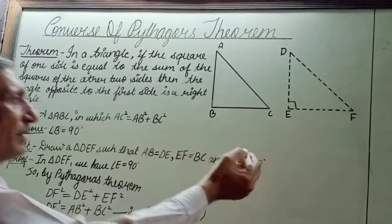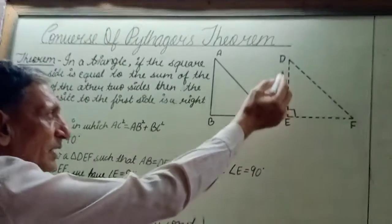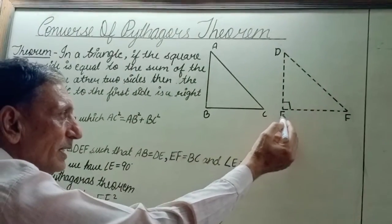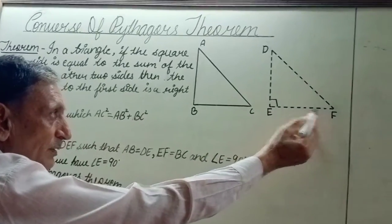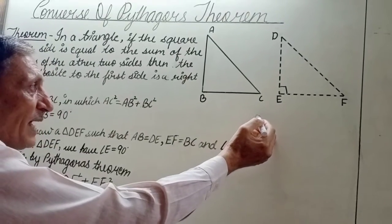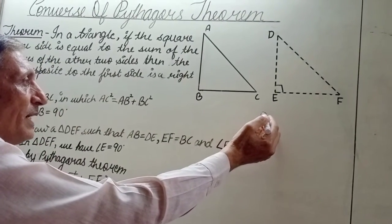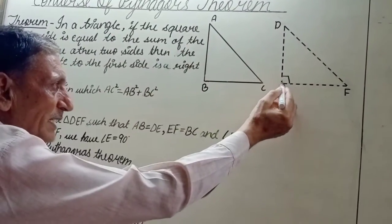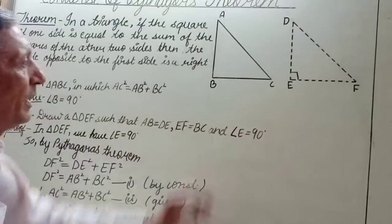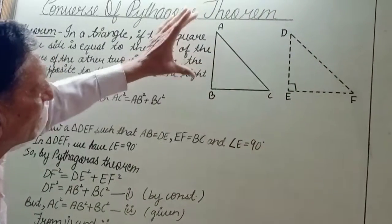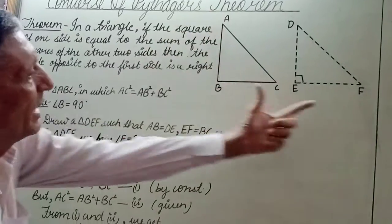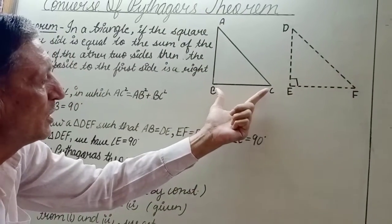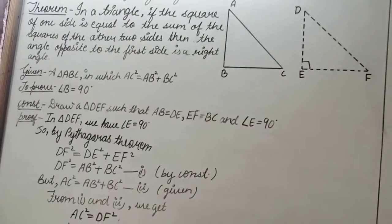See, draw a right angled triangle DEF, right angle, mind you, such that it is right angled at E and DE = AB and EF = BC. Now, let us start with the proof.